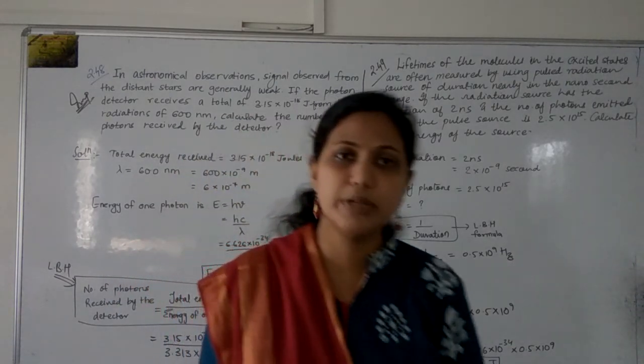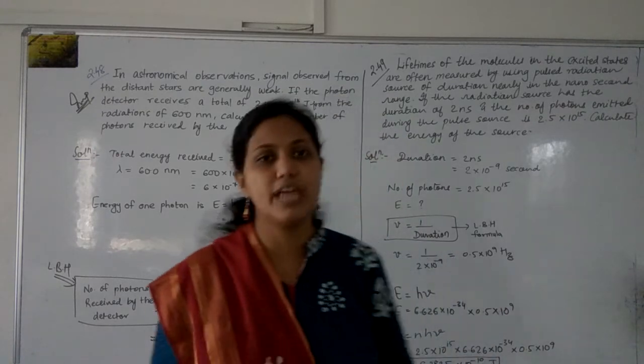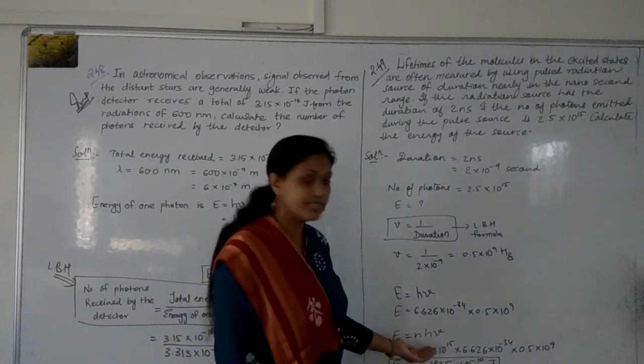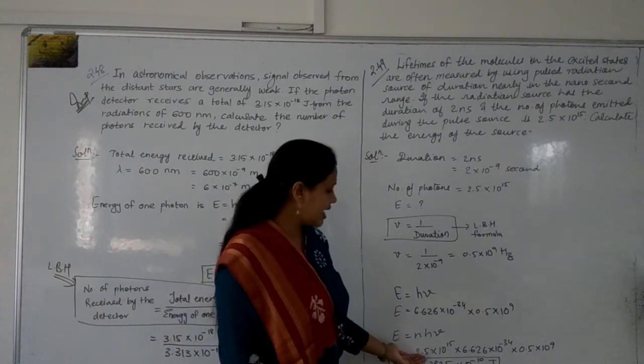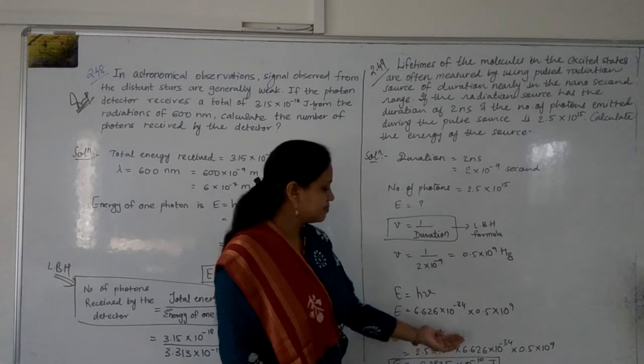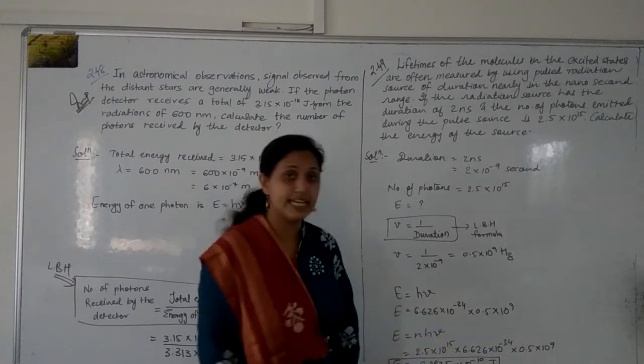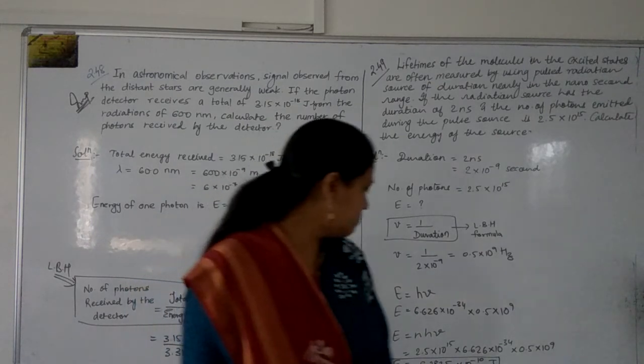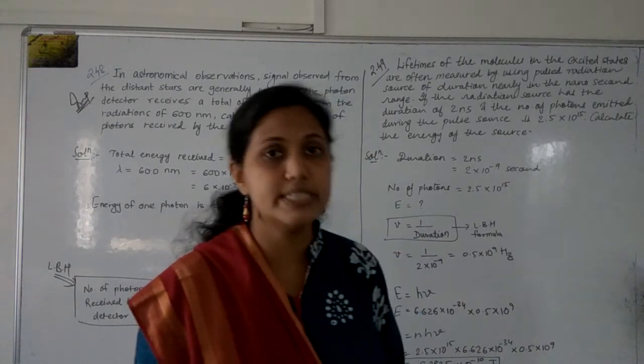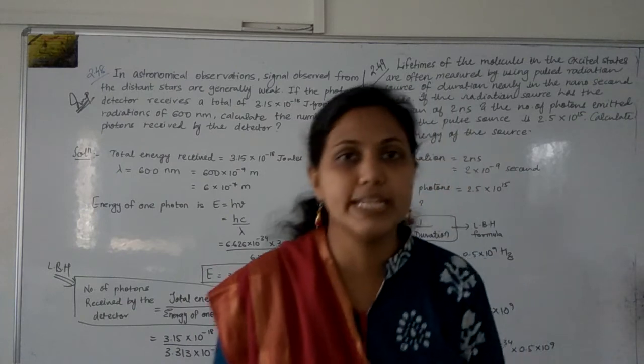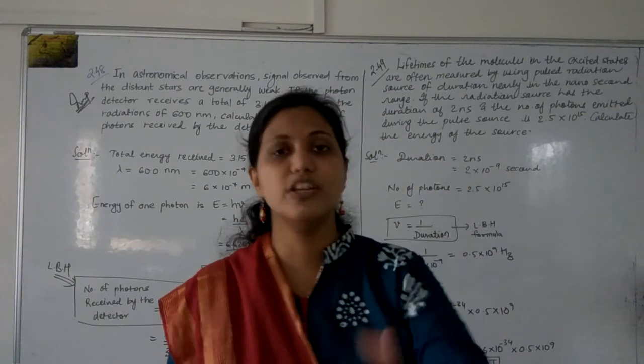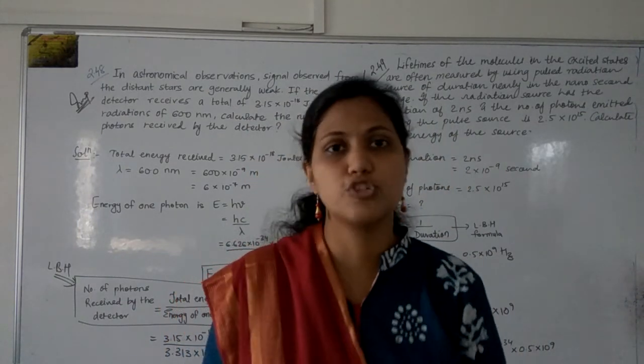The number of photons, so we have another formula E equals to Nhν. So N is equal to 2.5 into 10^15, this whole value, and you are getting energy equal to 8.825 into 10 to the minus 10 joules. So this was about numerical 2.49 of your exercise chapter number 2, structure of atom.